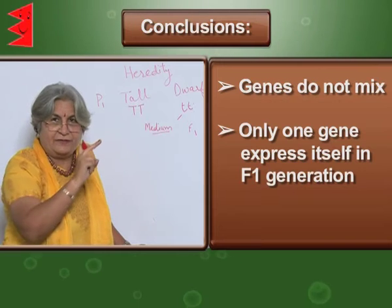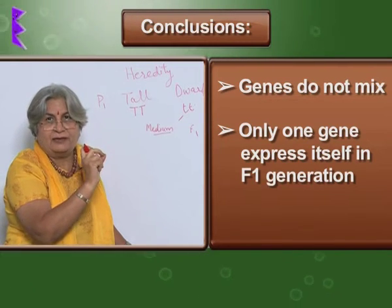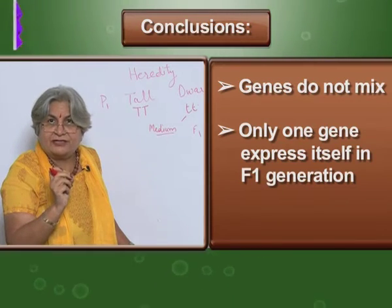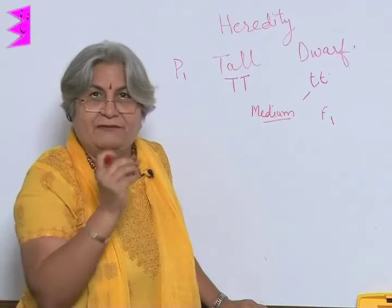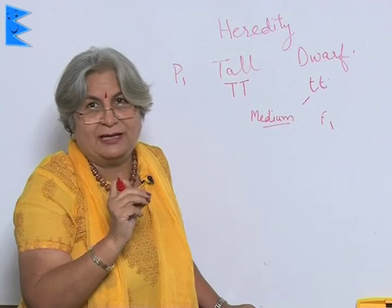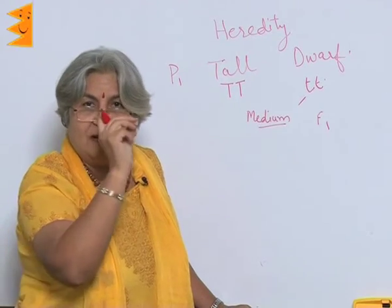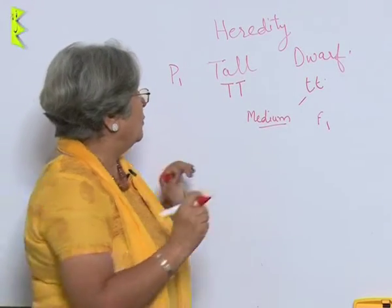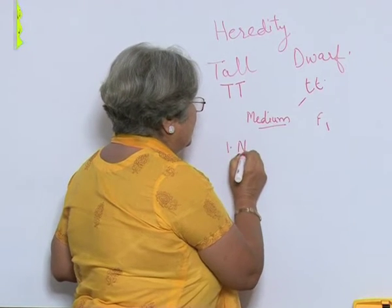Another example: if you crossbreed a red-flowered plant with a white-flowered plant, the F1 generation will not have pink flowers. Even if you do it with violet and white, it will not be light violet — it will be only violet flowers or red flowers. So no in-between situation.